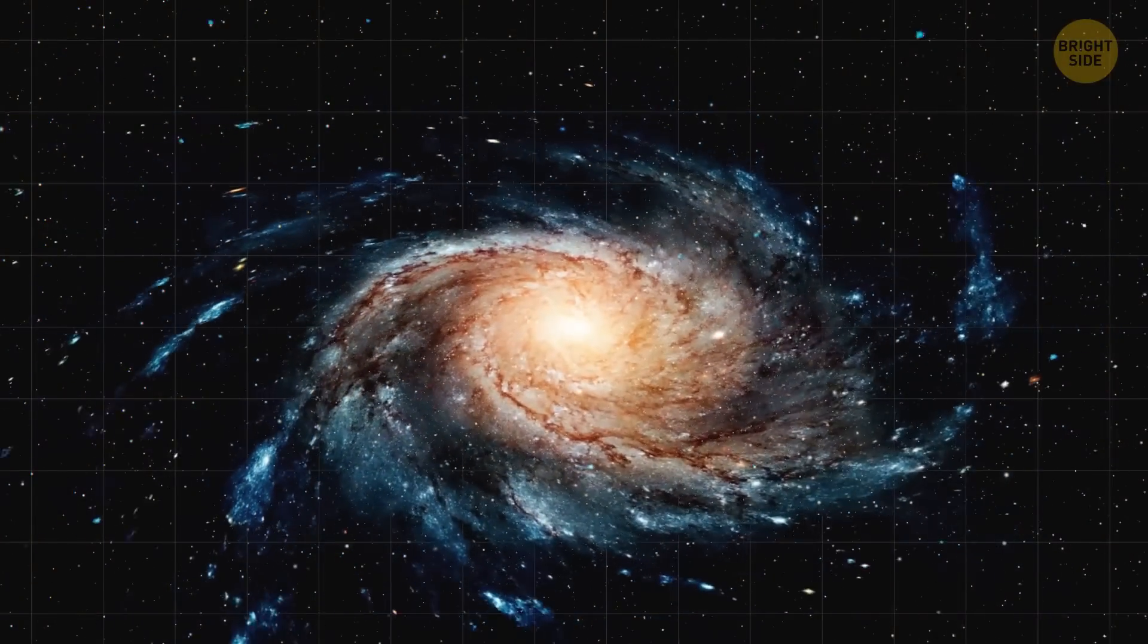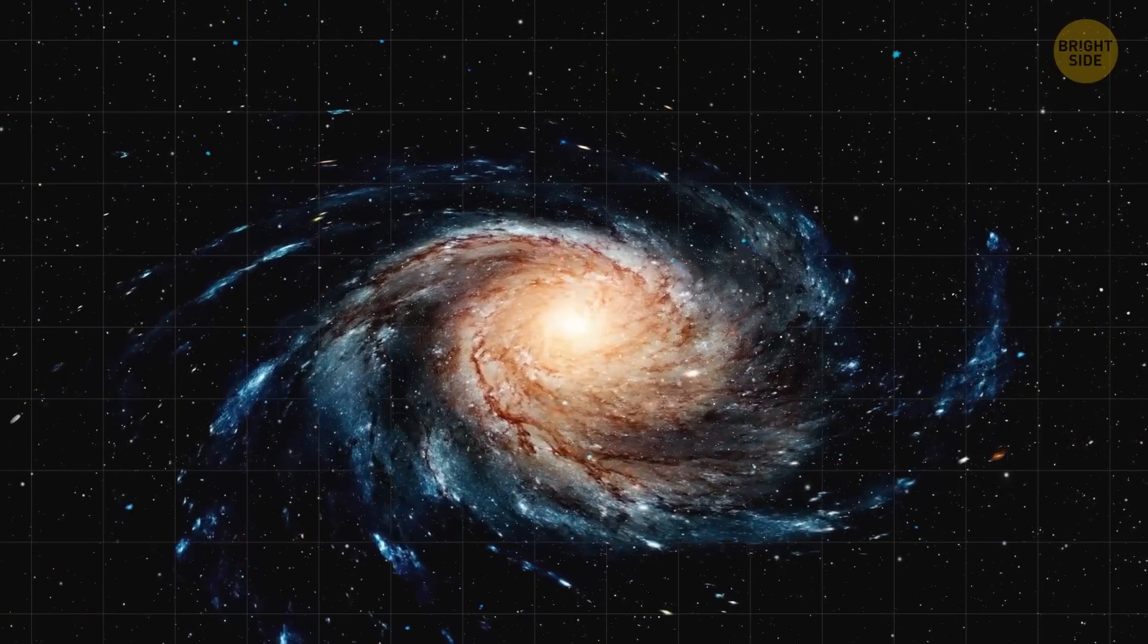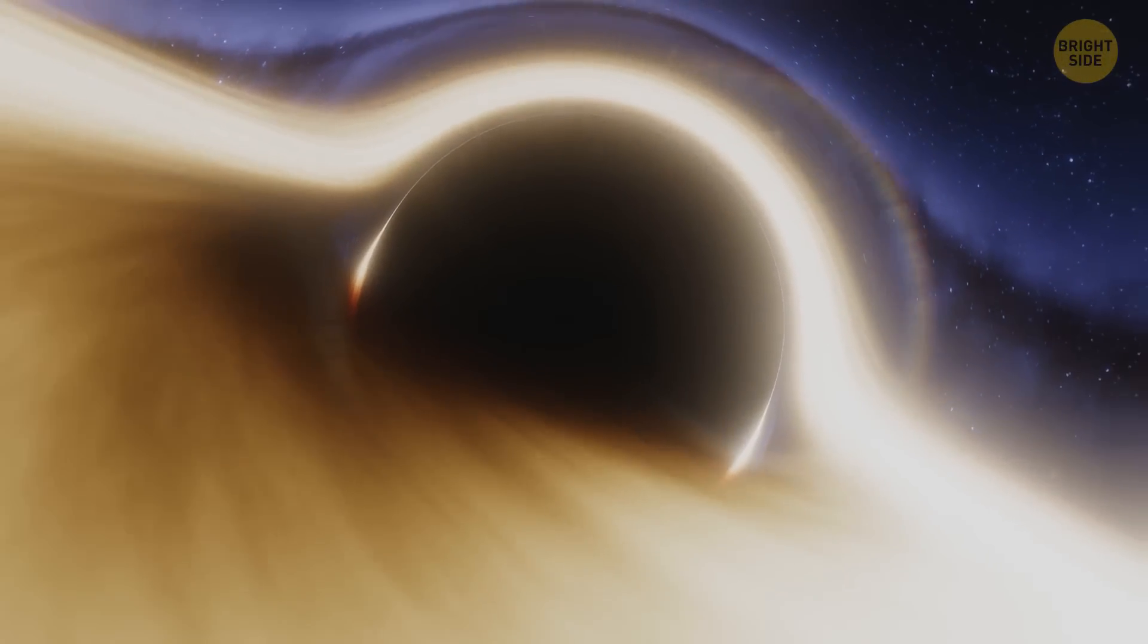The black hole in the center of our galaxy, Sagittarius A star, used to be super weird. Luckily, it didn't run away like that other one, but it was completely crazy in the past.